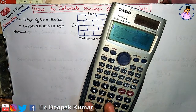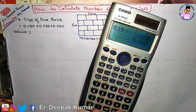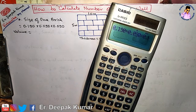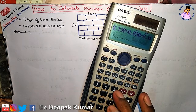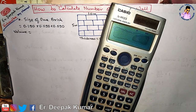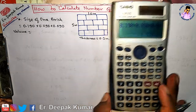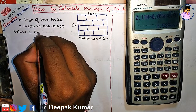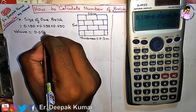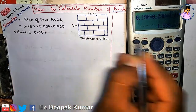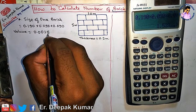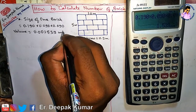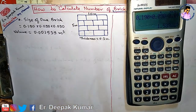The volume of one brick is 0.190 × 0.090 × 0.090, which gives us 0.001539 cubic meter.